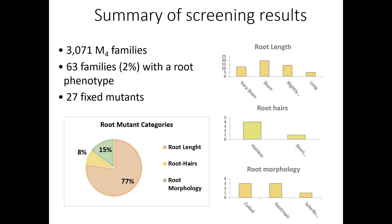In summary, we went through 3,071 F4 families — it took us almost a year and a half, so high throughput but within certain limits. We identified 63 families, roughly 2%, with a reasonably strong root phenotype. 27 are pretty much homozygous and fixed; some are still in the heterozygous state, probably because they have a lethal effect in the homozygous state. 77% of the mutants were for root length, with a smaller number for root hairs and root morphology.